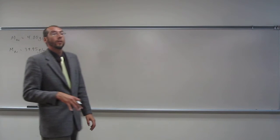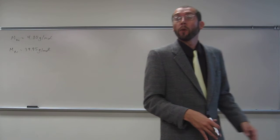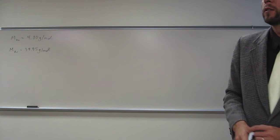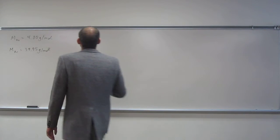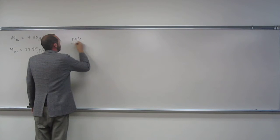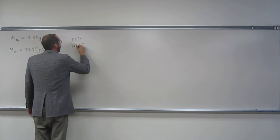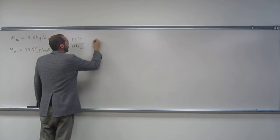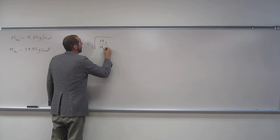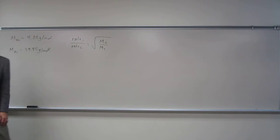So in order to do this problem, I have to understand that it wants us to use Graham's effusion law. So what is that? Well, it's the rate of gas one divided by the rate of gas two. That equals the square root of the molar mass of gas two to the molar mass of gas one.